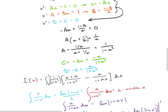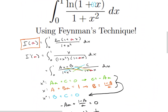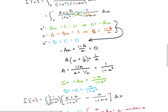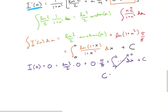We need to find the integration constant using a known value. Looking at our original equation, when a equals 0, the integrand becomes ln(1) over (1 plus x squared), which is 0 — an easy integral giving I(0) equals 0. Plugging a equals 0 into our expression: (ln(2) over 2) times arctan(0) is 0, ln(1) times pi/8 is 0, and the integral from 0 to 0 is 0. So C equals 0.